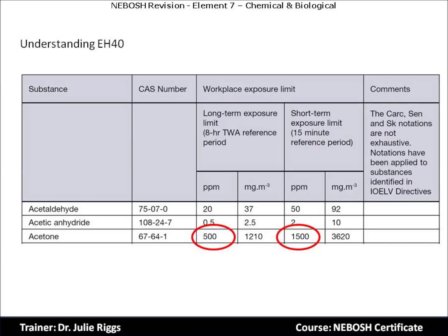In the final column, EH40 highlights any additional concerns such as CARC — C-A-R-C — which means capable of causing cancer; SEN — S-E-N — capable of causing occupational asthma; and SK, meaning the substance can be absorbed through the skin.